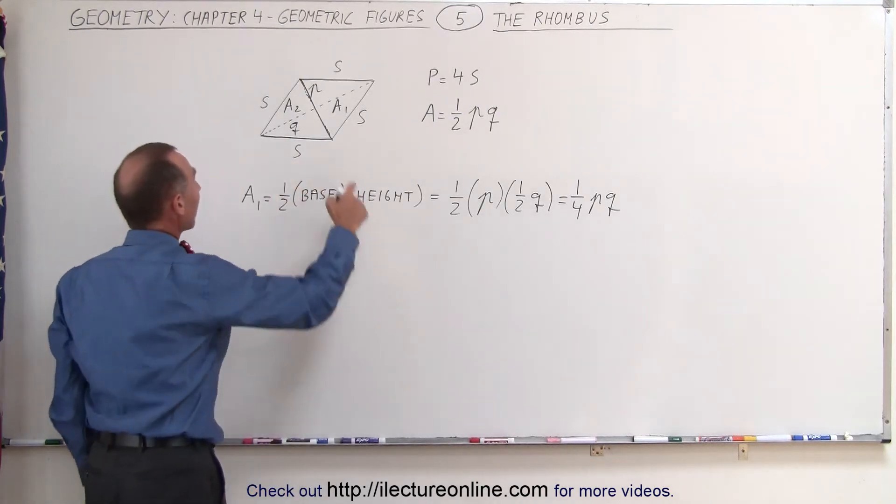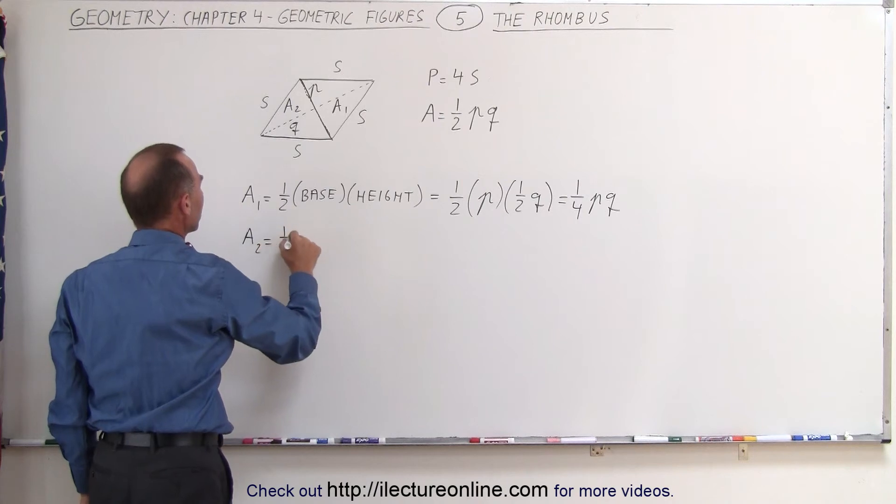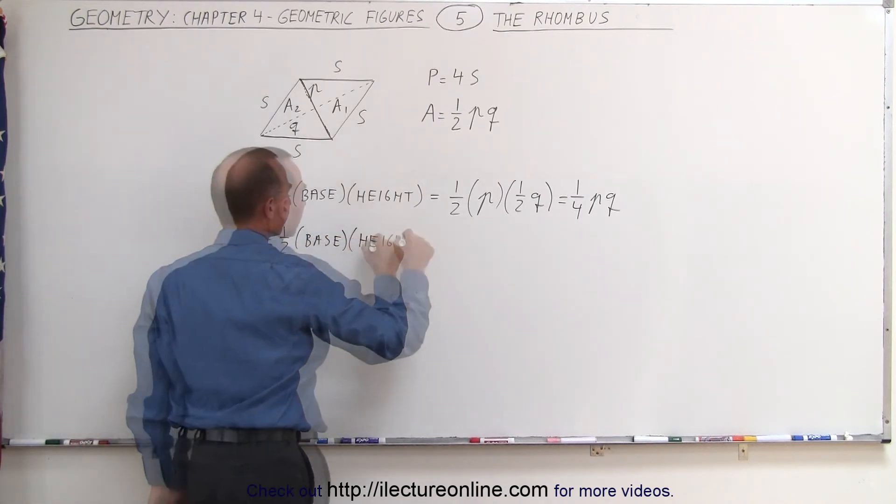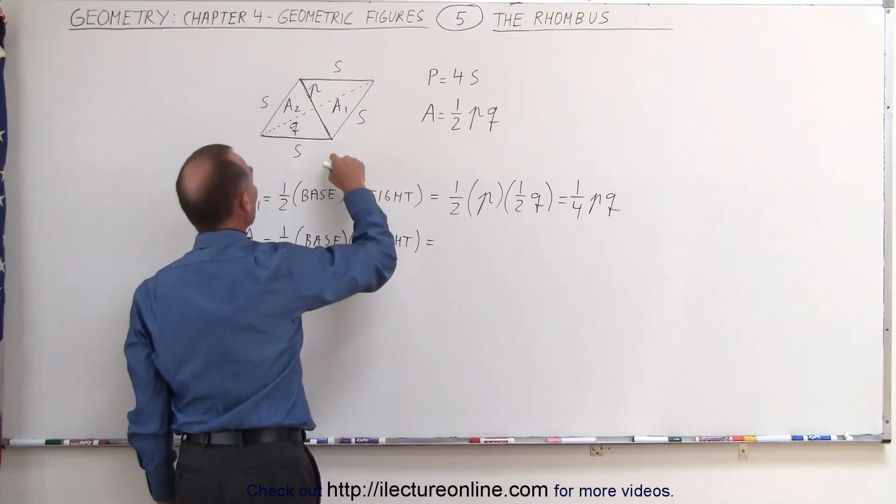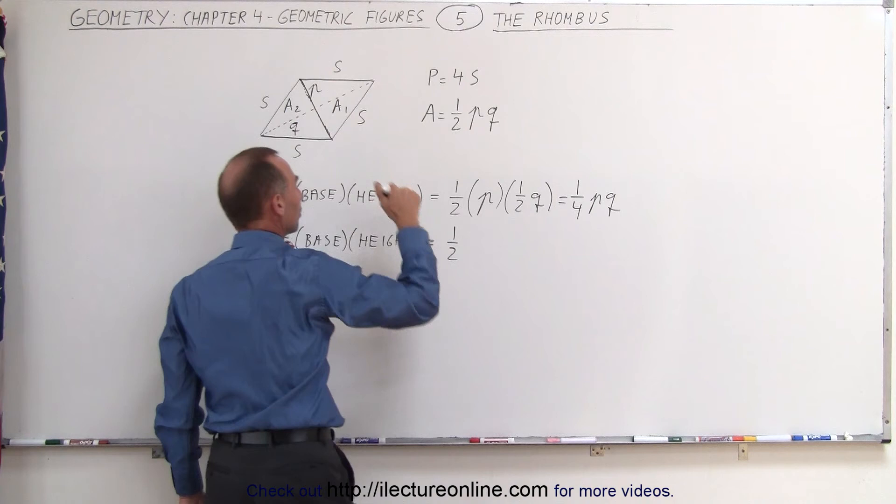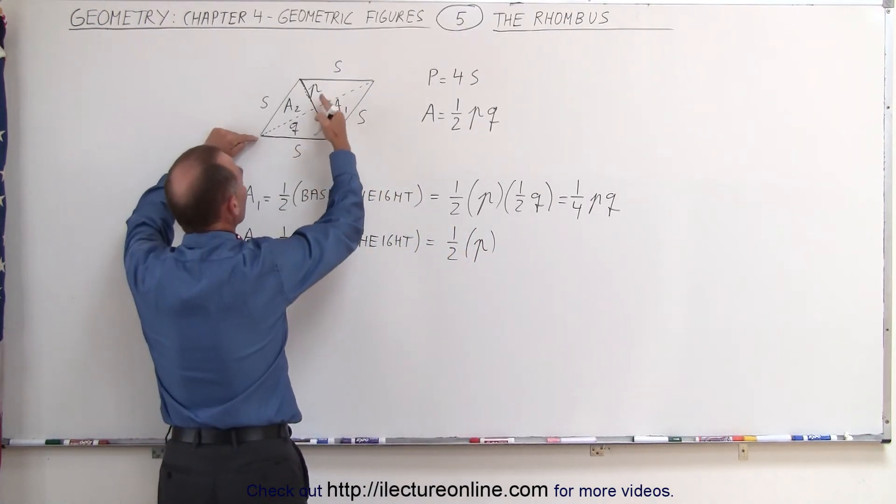Now when we do the same for the other triangle, we find the area A2. That's also going to be equal to half the base times the height. And here again that would be one-half. The base would be the length of the short diagonal P,